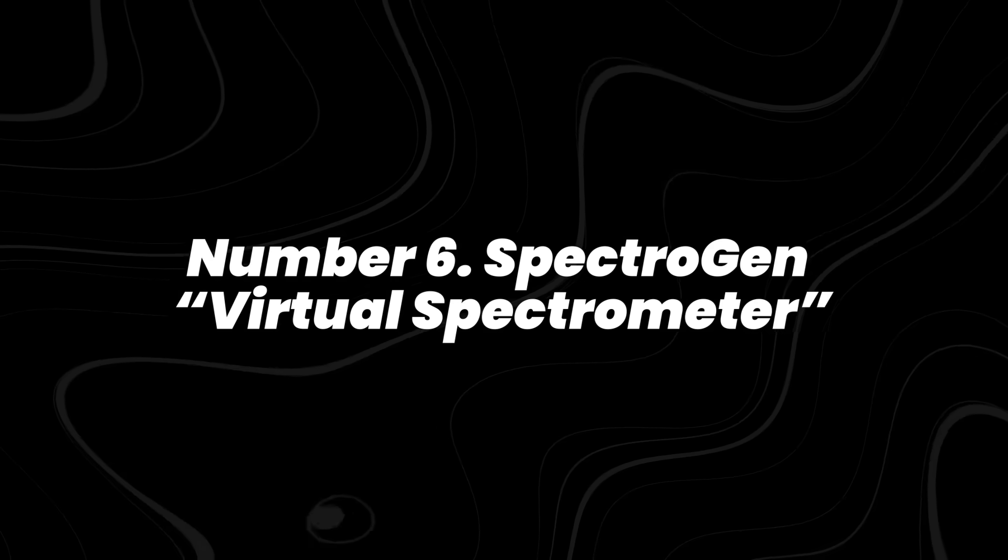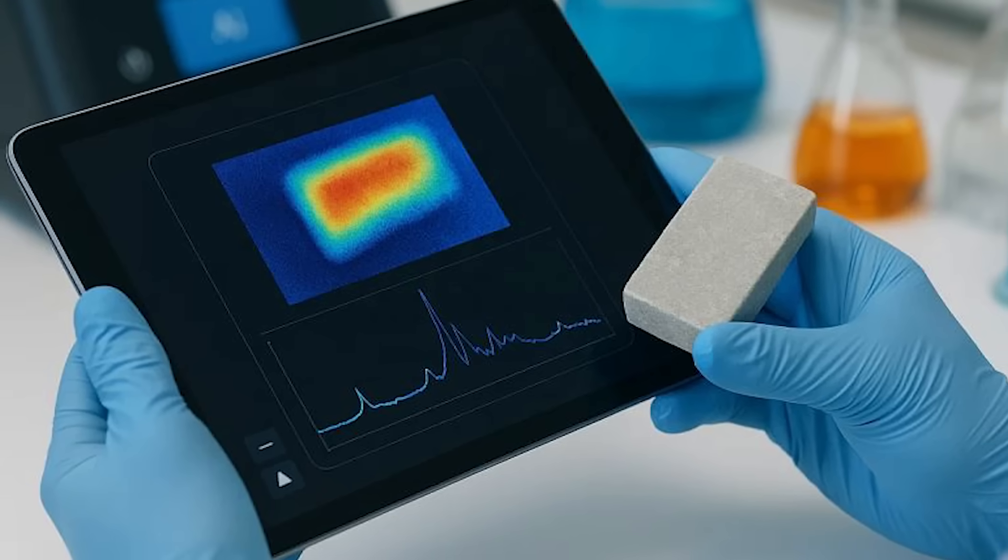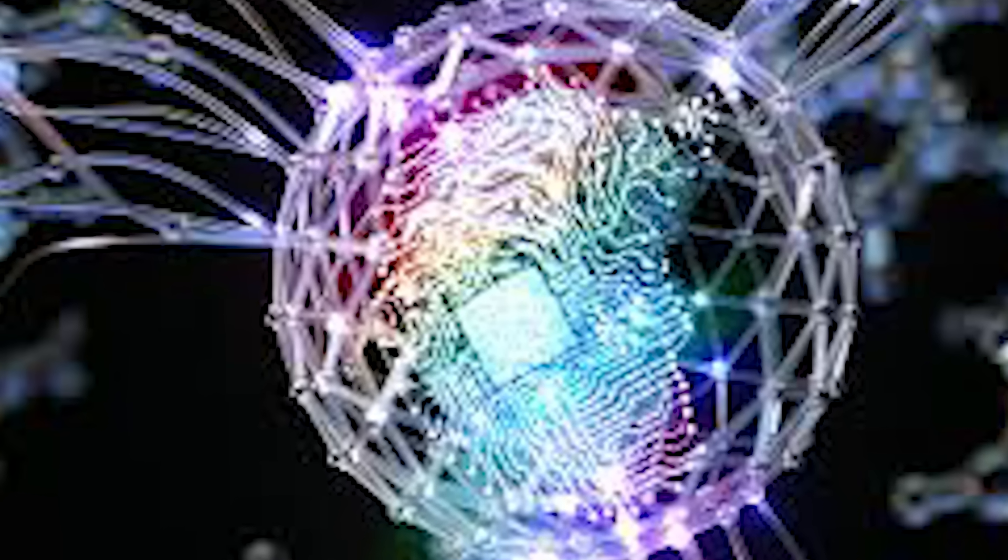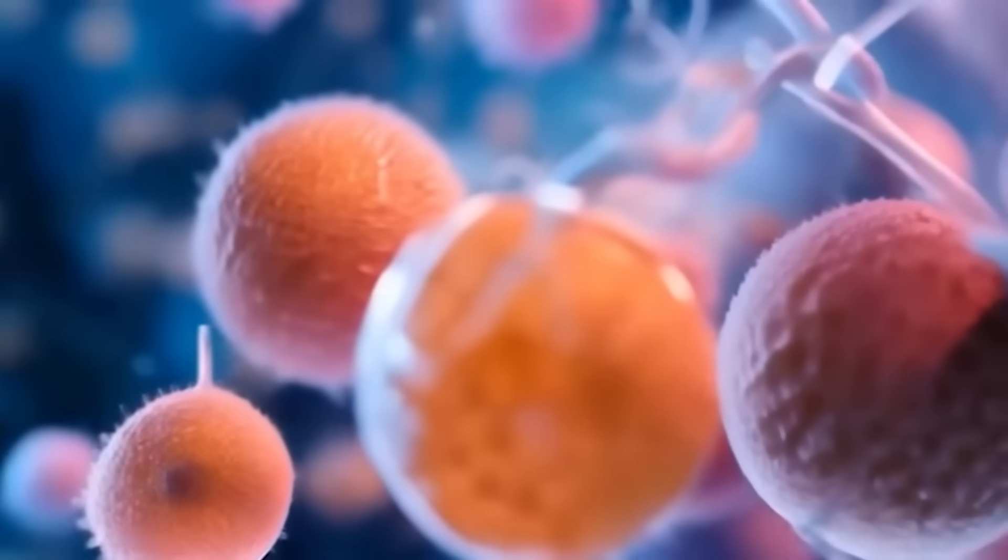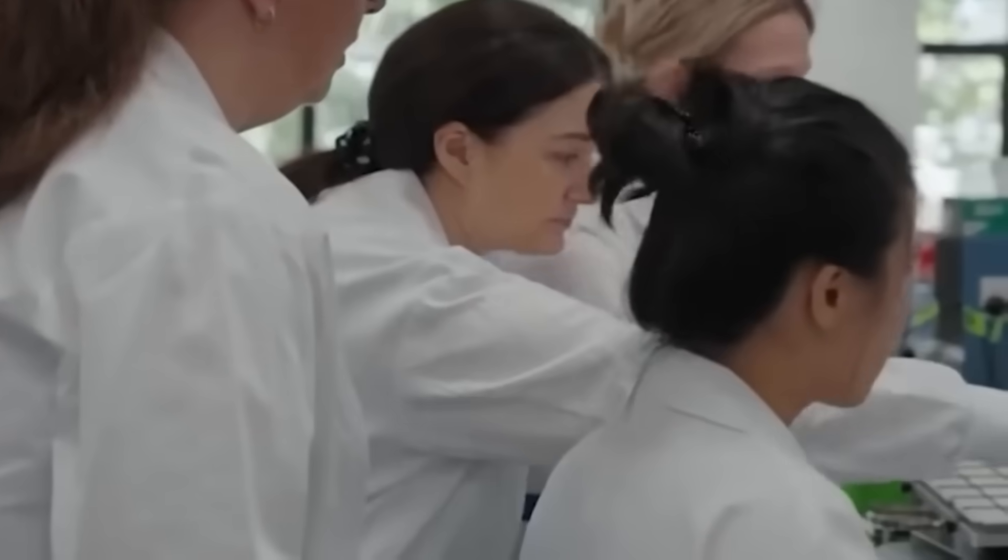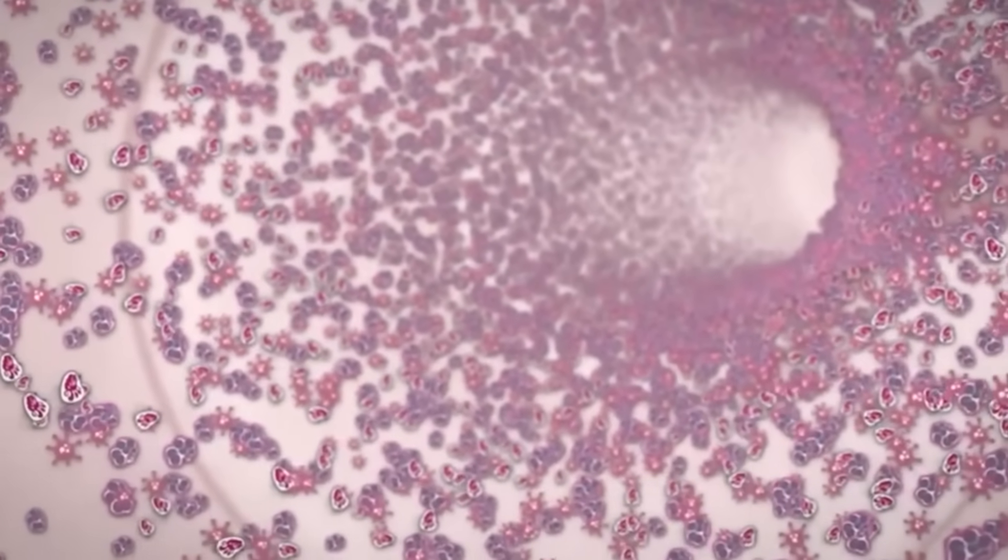Number 6, Spectrogen Virtual Spectrometer. MIT researchers recently developed Spectrogen, an AI model that generates spectroscopy data for materials without needing a physical spectrometer. Normally, testing material quality requires expensive lab instruments, but Spectrogen can predict chemical signatures in seconds.